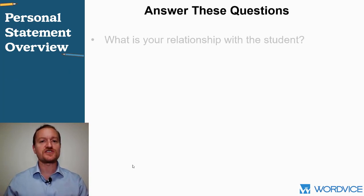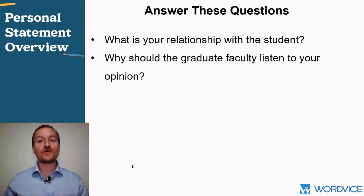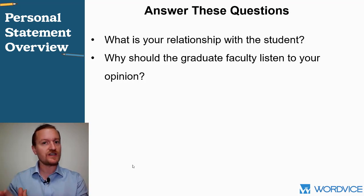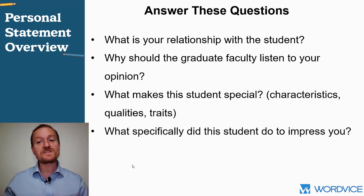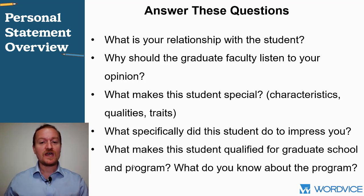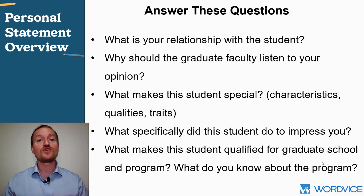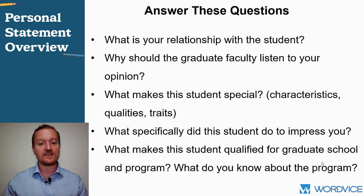The letter should easily answer these questions: What is your relationship with the student? Why should the graduate faculty listen to your opinion — what are your credentials? What makes this candidate special, in terms of qualities, traits, and personal characteristics? What specifically did the student do that impressed you enough to write this letter? And what makes this student qualified for this specific graduate school and program? The more you know about the program's faculty, courses, and resources, the better.